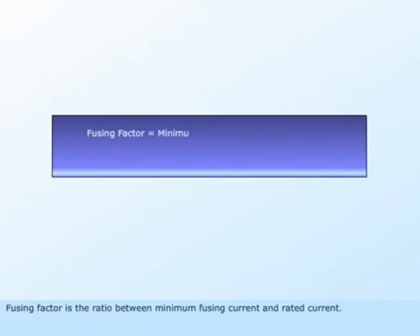HRC has a fusing factor of 1.45. The fusing factor is the ratio between minimum fusing current and rated current.